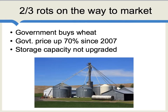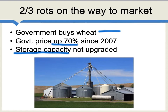Here's one very simple way to think about some of the problems. The government buys a lot of wheat from farmers. The price the government is paying for wheat is up about 70% since 2007. That encourages more wheat production, but arguably in this case too much wheat is being produced. For a very long time, storage capacity in India for wheat has not been upgraded, so there's all this surplus wheat and quite simply nowhere to put it.